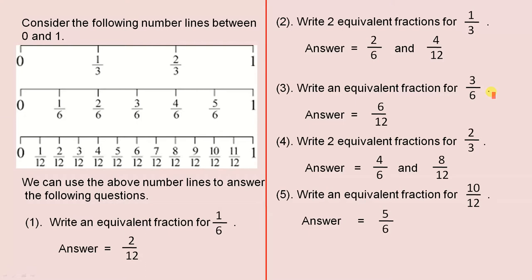Write an equivalent fraction for 3 over 6: there is 3 over 6, and it lines up with 6 over 12, so that is the answer. Write two equivalent fractions for 2 over 3: there is 2 over 3, and it lines up with 4 over 6 and 8 over 12, so those are the answers.